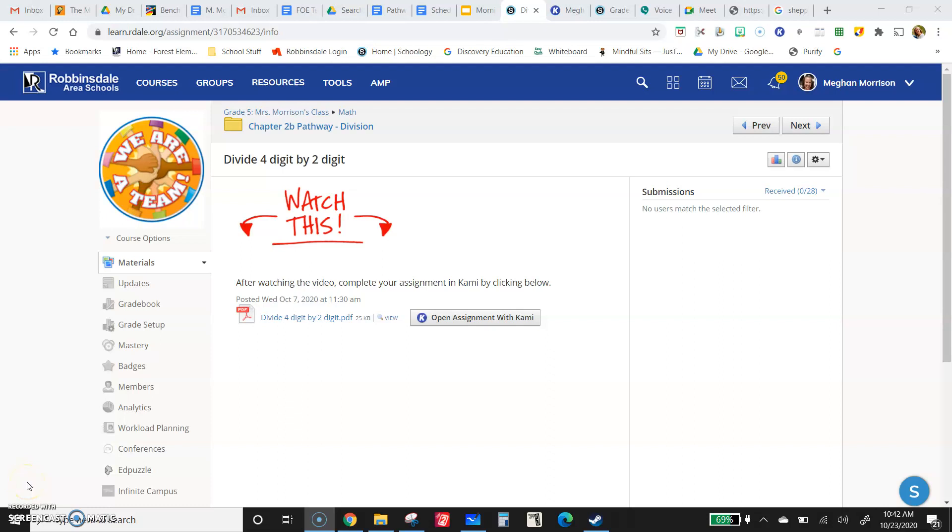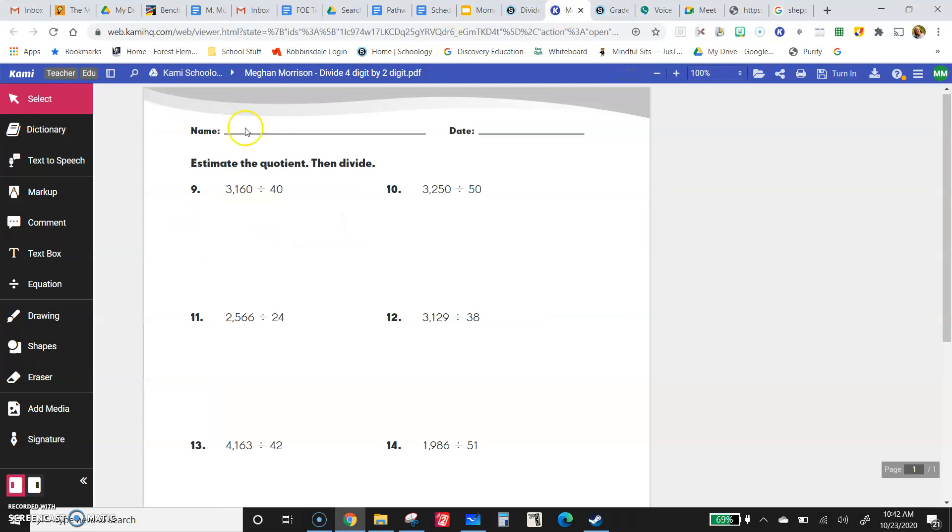All right fifth graders, we have divide four digit by two digit numbers and this will be our last long division practice for this pathway. One thing to note on the worksheet, it says estimate the quotient then divide. You do not need to estimate it. You can if you want to know about what your answer should be, but you can just do the long division and there's only eight today so not as many as the last one.